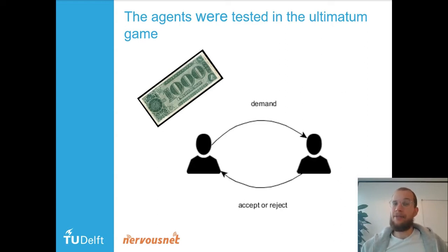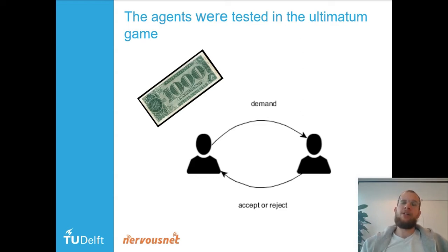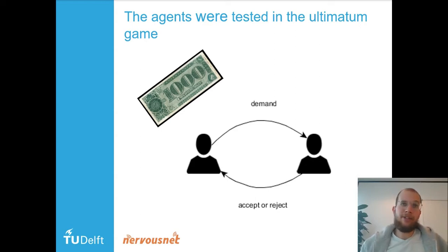One figure can divide $1,000 between himself and the other person — he can choose to give $100 away, $1 away, $500 away, $3 away, whatever he wants.